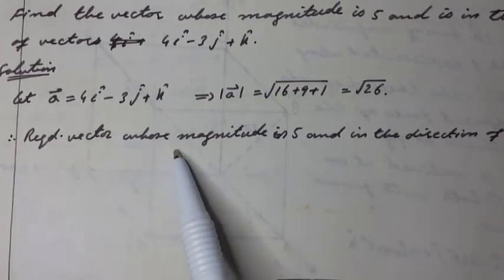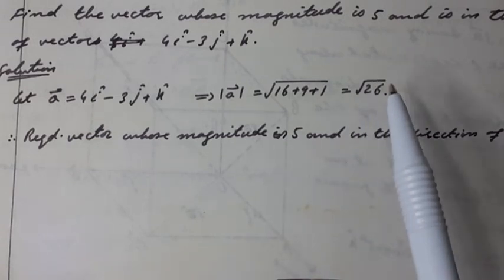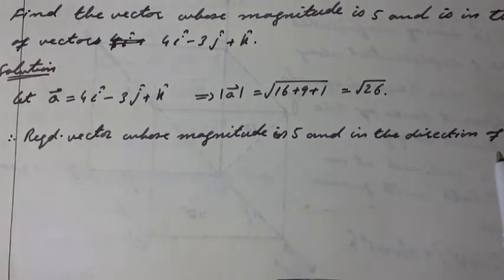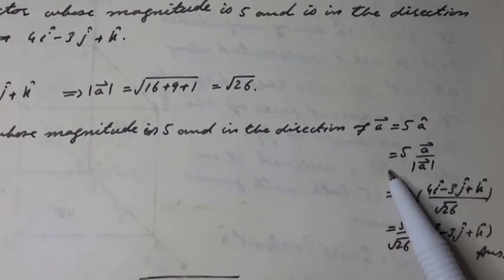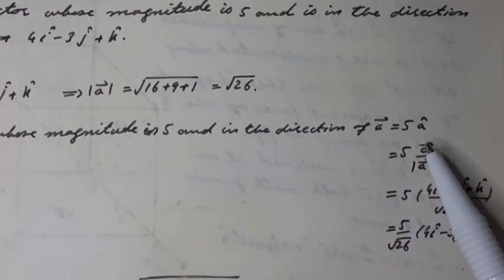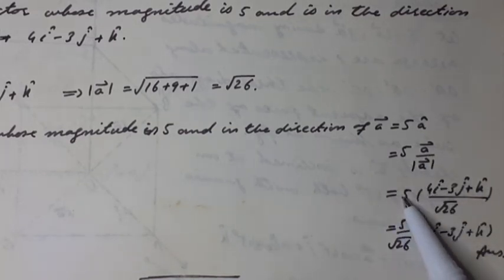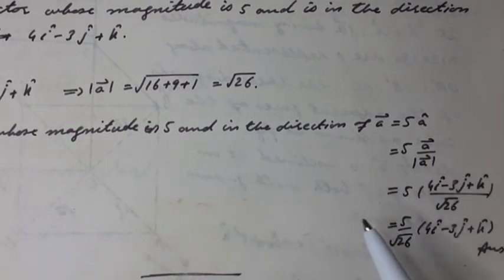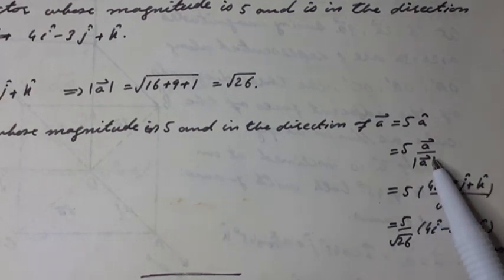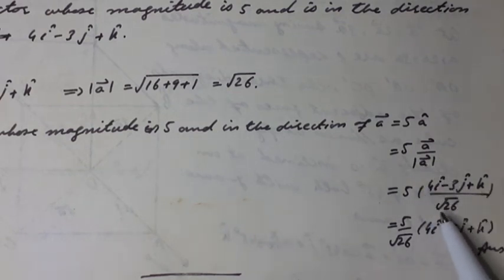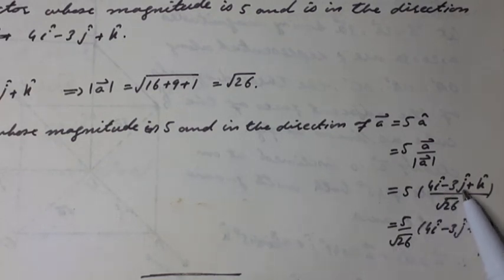Therefore, the required vector whose magnitude is 5 and in the direction of vector a equals 5 times the unit vector â, which can be written as 5 times (a vector divided by its magnitude). This equals 5 into (4î minus 3ĵ plus k̂) over √26, which simplifies to (5/√26)(4î minus 3ĵ plus k̂). Answer.